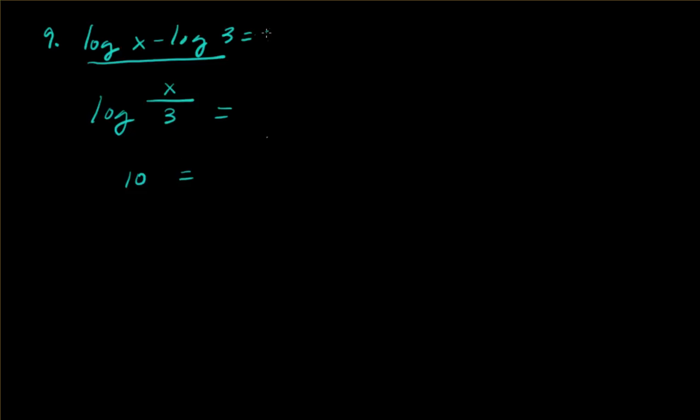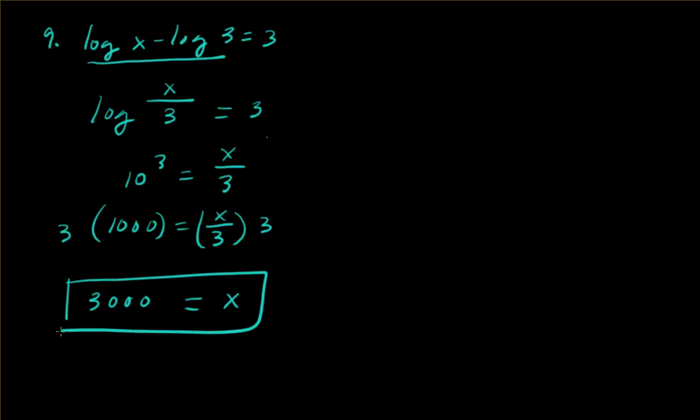So to the 3rd, okay, and then x divided by 3. So that's 1,000 equals x divided by 3, multiply both sides by 3, so x equals 3,000. And that should be the final answer.